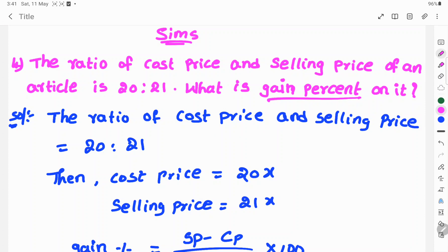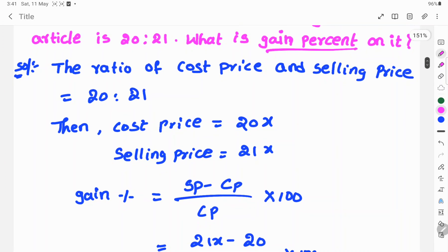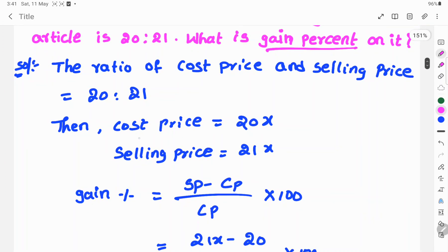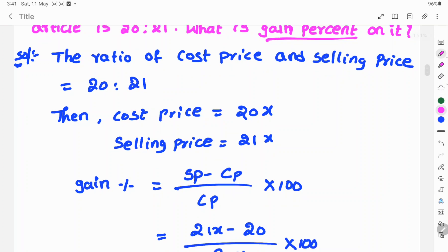So, to change this ratio to numbers, multiply with x. Then cost price is equal to 20x and selling price is equal to 21x.